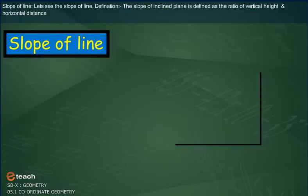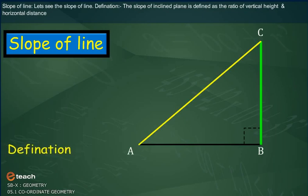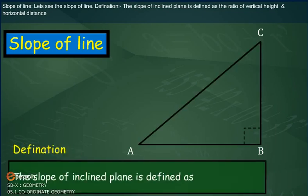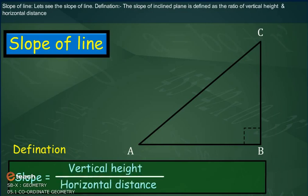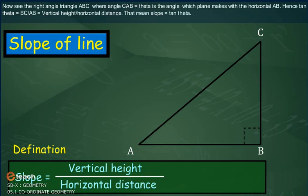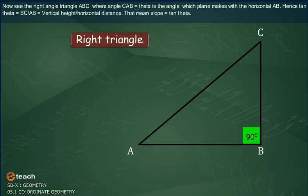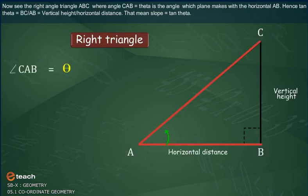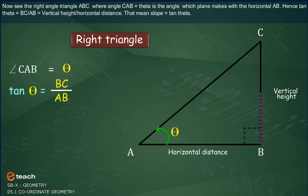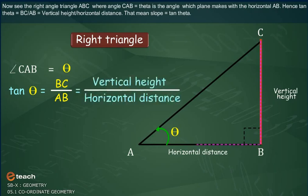Slope of a line. The slope of an inclined plane is defined as the ratio of vertical height to horizontal distance. In right angle triangle ABC, where angle CAB equals theta is the angle which the plane makes with the horizontal AB. Hence, tan(theta) = BC / AB = vertical height / horizontal distance. That means slope equals tan(theta).